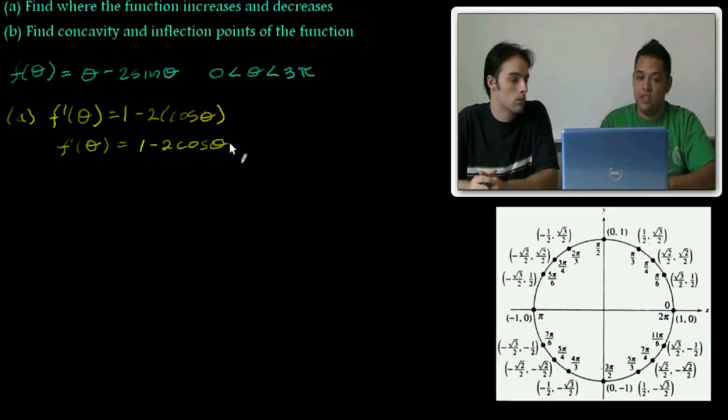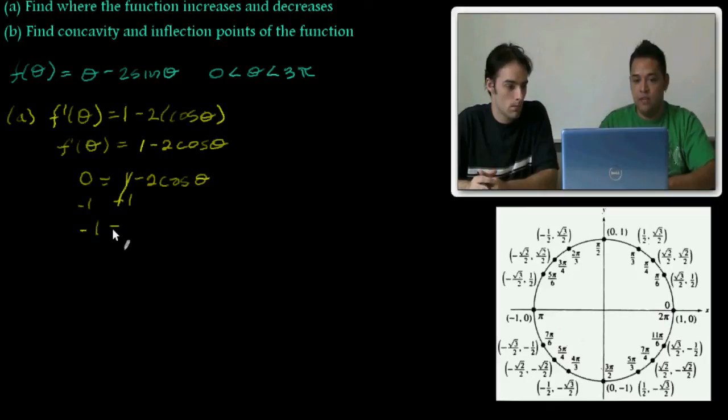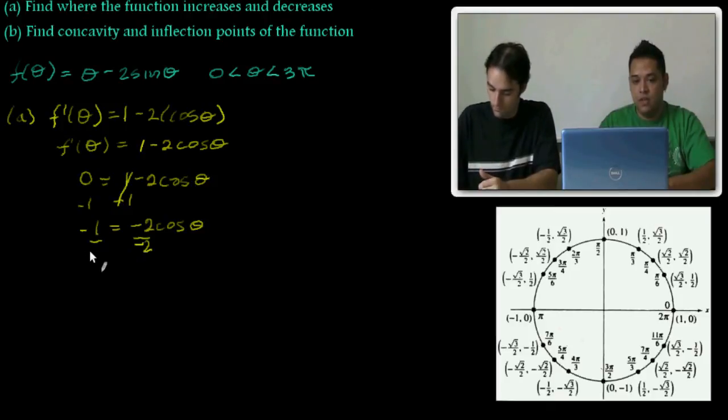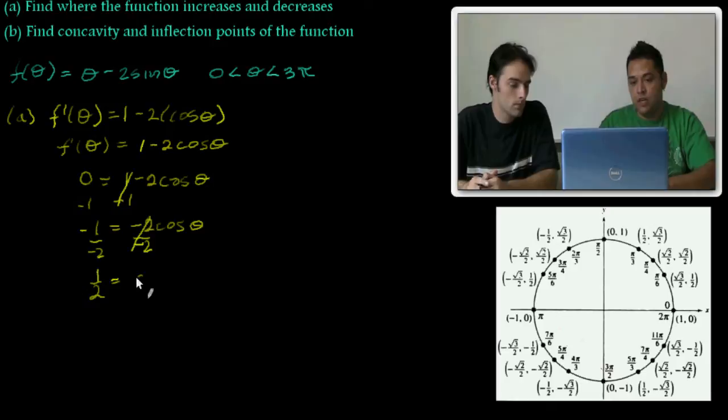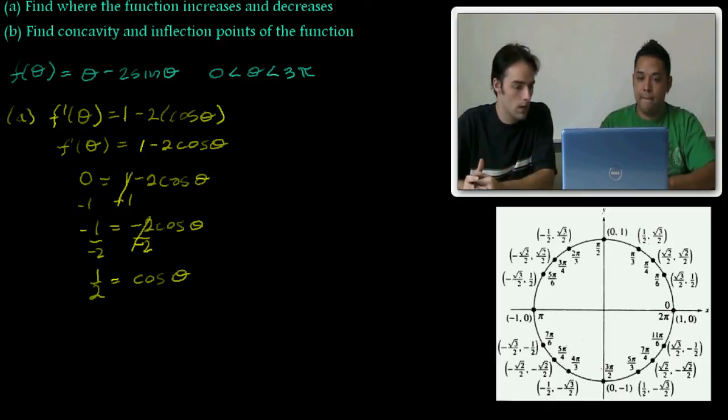This is going to be f prime of theta equals 1 minus 2 cosine theta. We need to find the critical points. To find the critical points, we set the derivative equal to 0 and solve for theta. We first move the 1 over, and I'm left with negative 1 equals negative 2 cosine theta. Then divide both sides by negative 2. Negative 1 divided by negative 2 is positive, so 1 half equals cosine of theta.